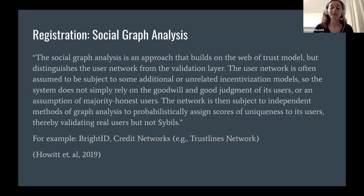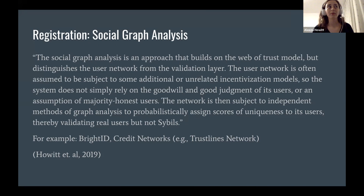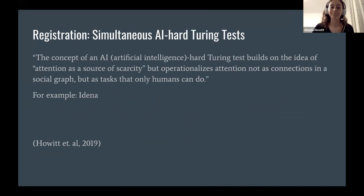What's interesting to me is the use of credit networks — for example, like the trust lines network. You could use people issuing credit to each other and an analysis of creditworthiness of individuals to approximate who's real and who's part of which identity system or which region. You could also design an AI-hard Turing test — basically a test that only humans can pass.